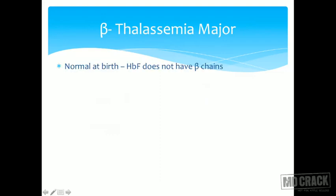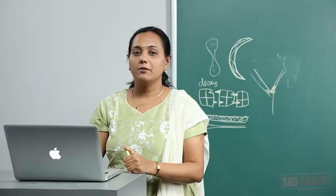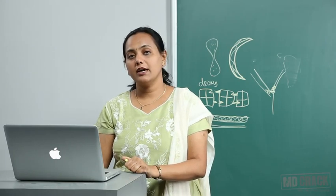Beta thalassemia major is normal at birth because fetal hemoglobin does not contain beta chains. Severe cases present with hypochromic microcytic anemia, poikilocytosis, RBC counts higher than expected for the level of anemia, and nucleated RBCs. The unaffected alpha chains continue synthesis, aggregate, and form inclusion bodies. Death usually occurs in the first or second decade of life. This completes the molecular basis of sickle cell anemia and thalassemia.